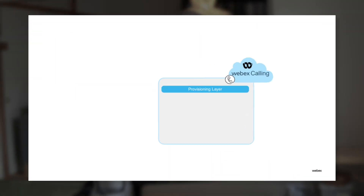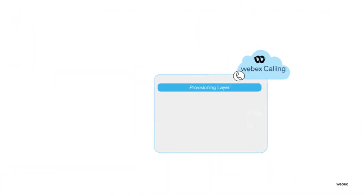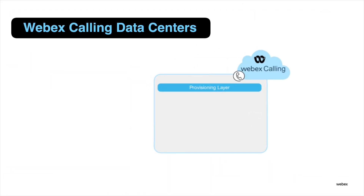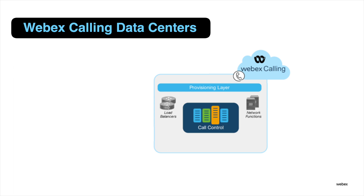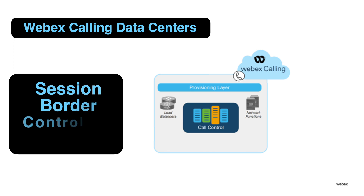Let's talk about what's going on at each of these data centers. Generally, each data center is home to various network functions, call control servers, load balancers, and so forth — to provide scalability and redundancy. Each data center also hosts two types of session border controllers, or SBCs.